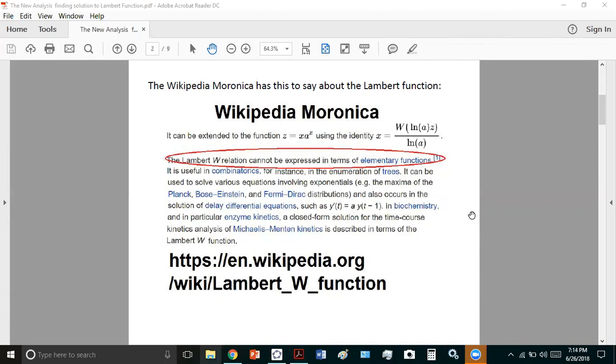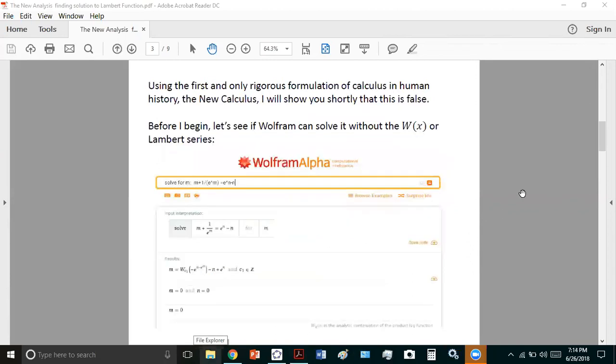So, I think the best thing to do is for me to begin first by showing you that using the new calculus, you can actually find an elementary function. And so, if you try to solve this auxiliary equation, which I showed you in previous videos, the one that you obtained for e to the x, you'll see that Wolfram can only give it to you in terms of the analytic continuation of the product log function. Okay, and this is the solution it gives,